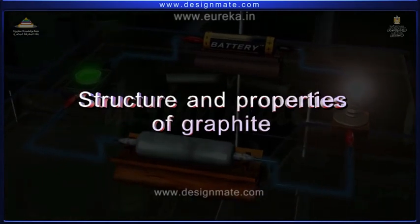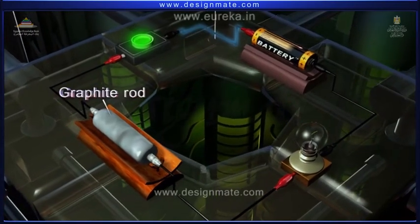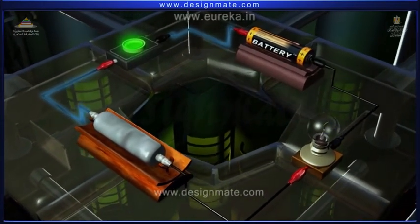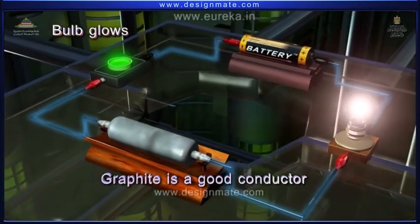Structure and properties of graphite. When electric current is passed through a graphite rod, the bulb glows, indicating graphite as a good conductor.